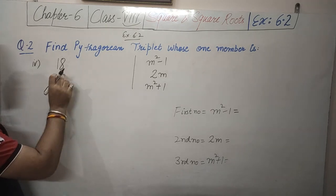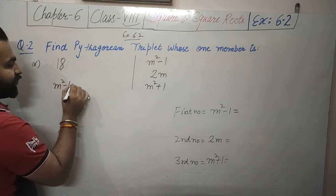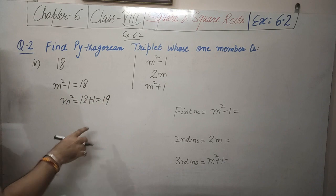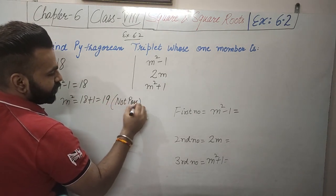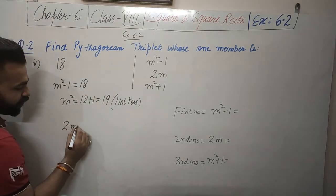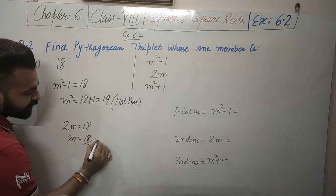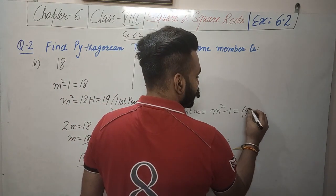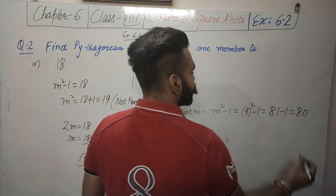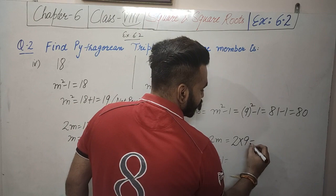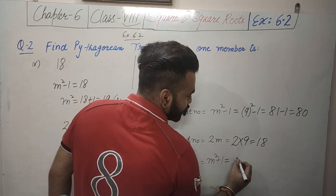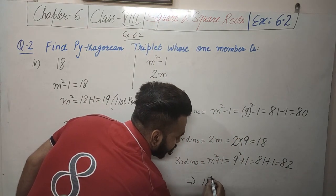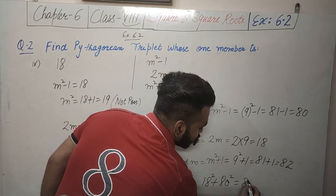Last question: member is 18. If M squared minus 1 equals 18, then M squared equals 19, but 19 is not a perfect square, so this case is not possible. If 2M equals 18, then M equals 9. So: M squared minus 1 equals 81 minus 1 equals 80; 2M equals 18; M squared plus 1 equals 81 plus 1 equals 82. So 18 squared plus 80 squared equals 82 squared.